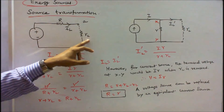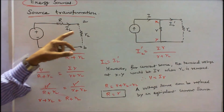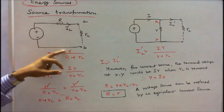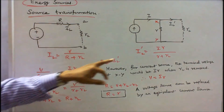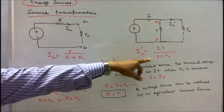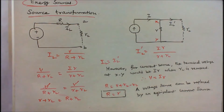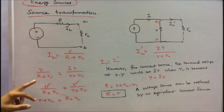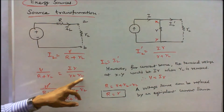Here RL, R-suffix-L, is the load resistance, and IL is the load current. IL-dash is the load current for the current source equivalent. We can find IL: IL equals V divided by (R plus RL). IL-dash equals I times R divided by (R plus RL).